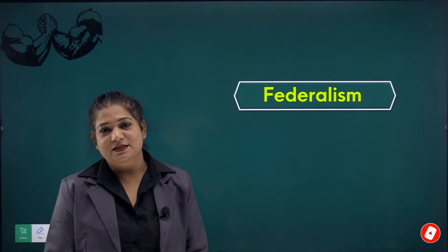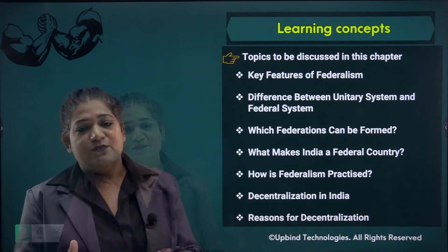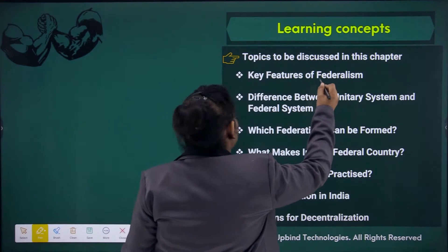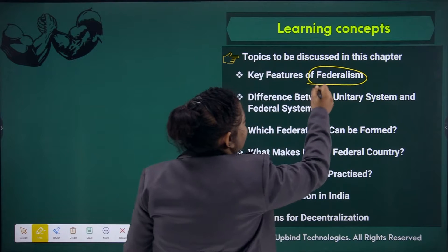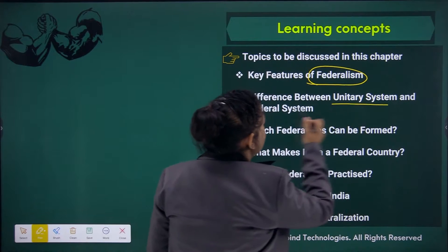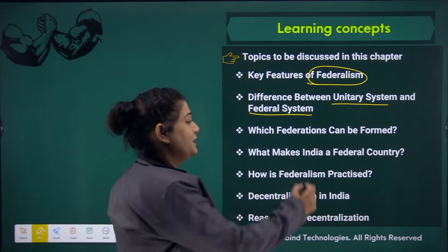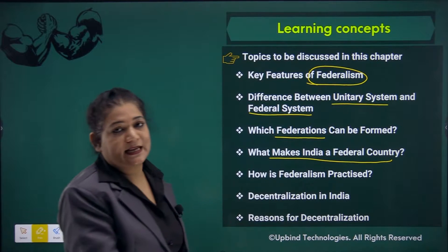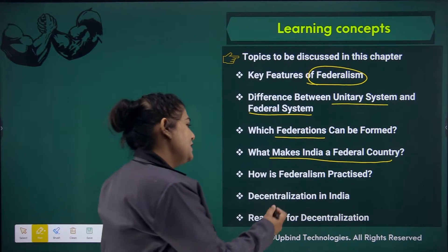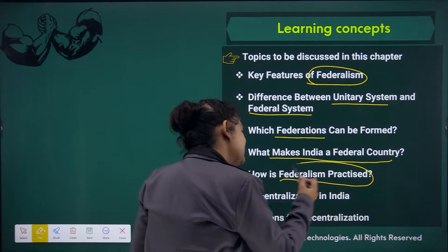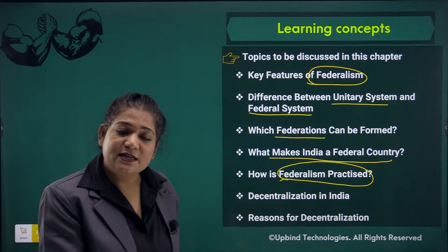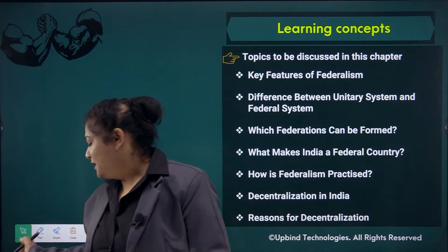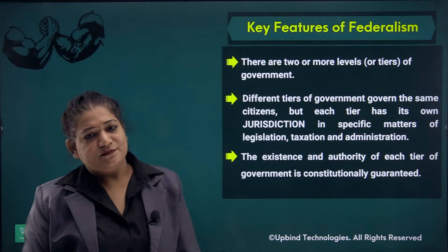Hello everyone, today we are going to discuss Chapter 2, that is Federalism. First we are going to discuss federalism, its key features, the unitary system and the federal system — what is federalism, and how did federalism come about. Now let's come to the topic of the key features of federalism.